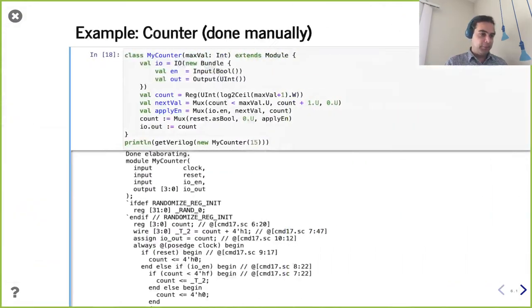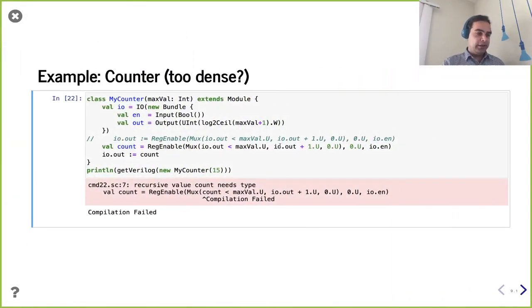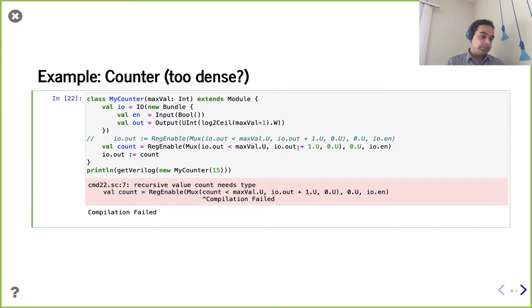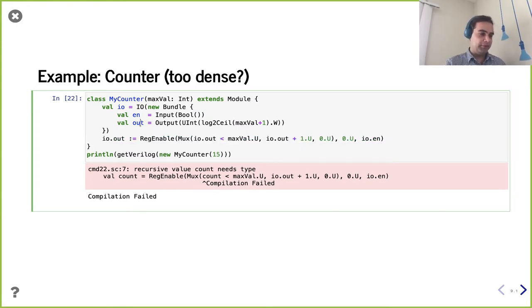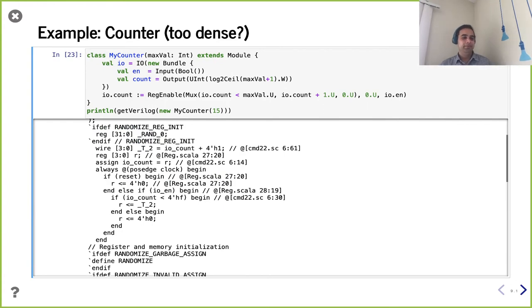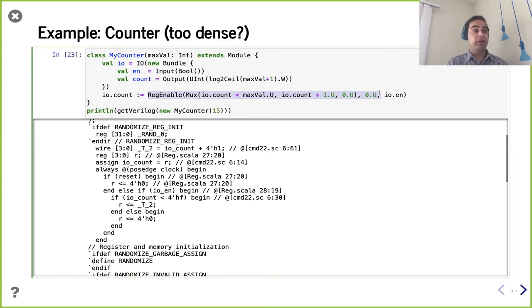To answer why we don't always use RegEnable: when we want a feedback path, it's hard to have everything at once. Naming things adds clarity. Maybe making a better interface name could help, but the one-liner is still pretty dense. Getting correct hardware is only step one; making it readable, robust, and reusable is what we're really trying to instill in this course. The hardware is the same across these variants — it's about maximally useful design.